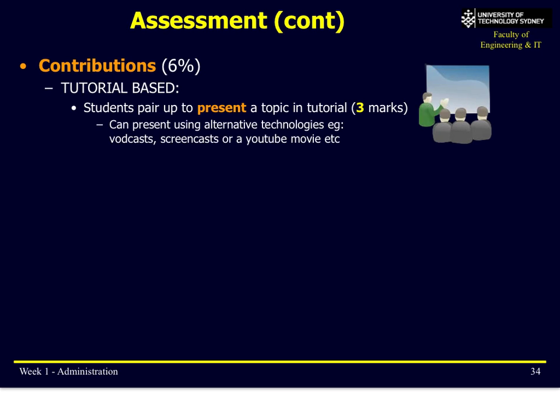The final assessment item is worth only 6% — it's what we call a contribution activity. You'll pair up, or work in a group of two to three students, and present a topic in your tutorial. The topic is something you choose that you're interested in, related to information technology. There are lots of examples of topics online; you can suggest your own or follow the list from your tutor.